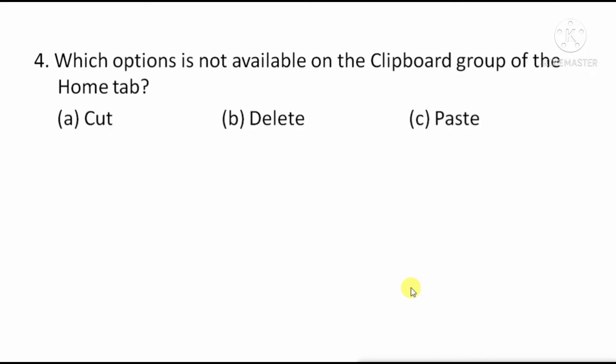Which option is not available on the clipboard group of the home tab? Option A: Cut. Option B: Delete. Option C: Paste. The right answer is Option B, Delete.